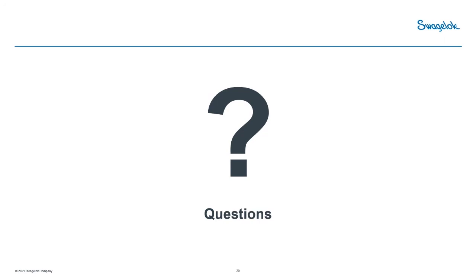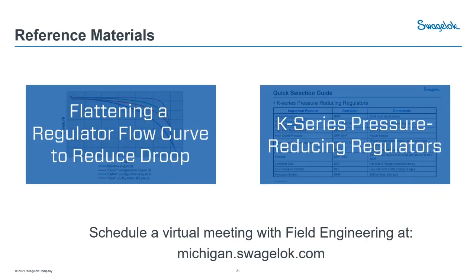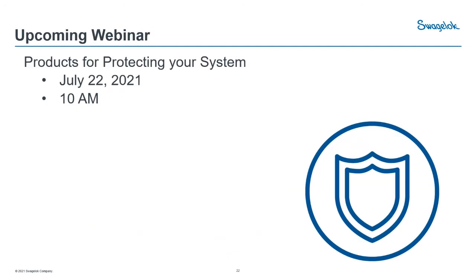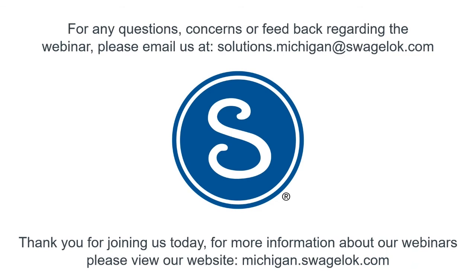That looks like we answered all the questions. Remember, if you have a specific question that wasn't answered or you come up with one later, please feel free to follow up with your account manager. After the webinar, everyone who was present will receive a follow-up email with some useful reference documents. We highly encourage you to take advantage of our technical team as a resource — we're ready to help with your specific applications and selections. Be sure to join us for our next webinar featuring protecting your system, next month July 22nd at 10 a.m. Thank you all for joining us today. For more information about our webinars, please visit michigan.swagelok.com.